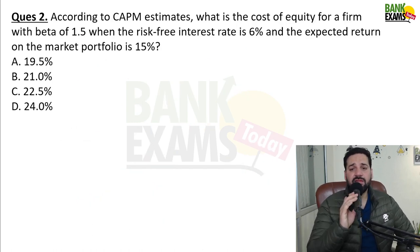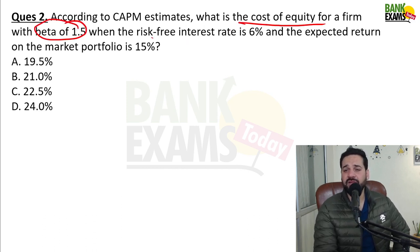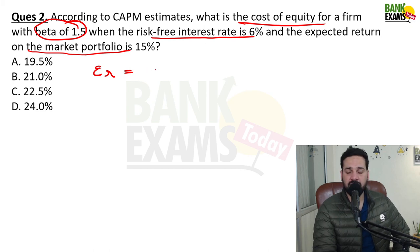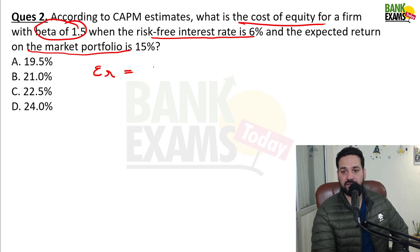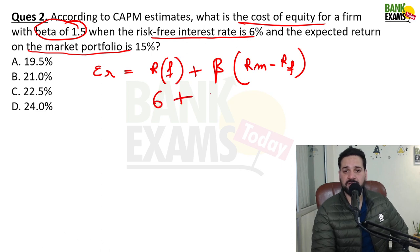According to CAPM estimates — the question may use this phrasing — what is the cost of equity for a firm? Beta is 1.5, risk-free return is 6%, and expected return on market portfolio is 15%. Using the formula: Expected return = RF + beta × (RM − RF) = 6% + 1.5 × (15% − 6%).